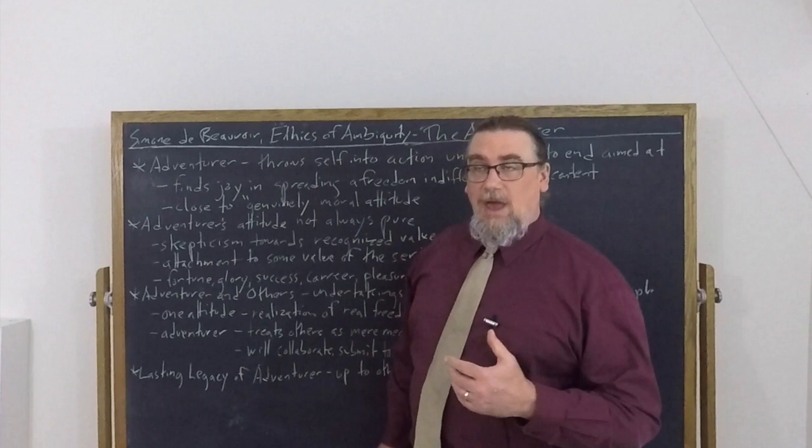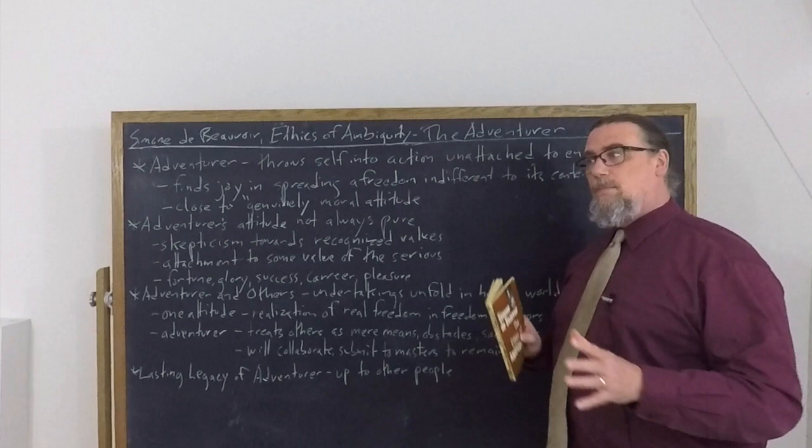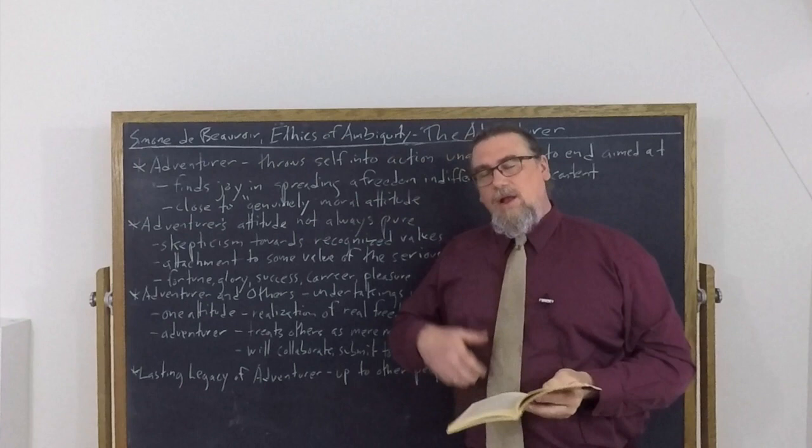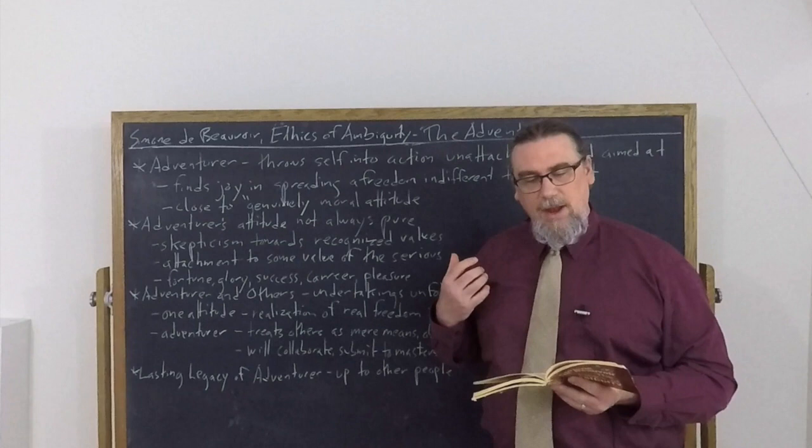In the second part of the Ethics of Ambiguity, Simone de Beauvoir is examining types or persons who make an inauthentic use of their human freedom. And the fourth type that she considers she calls the adventurer. The adventurer comes right after the nihilist because they have some things in common.